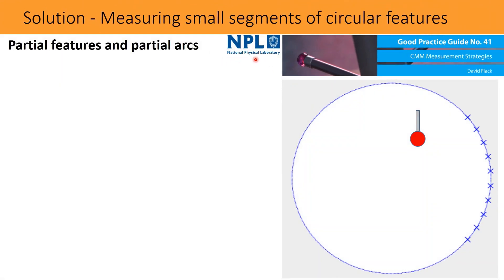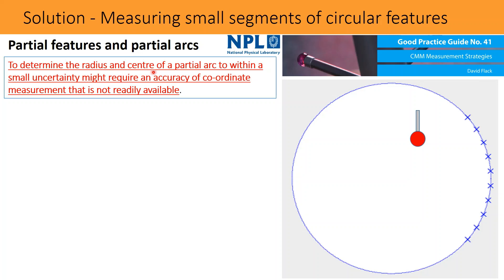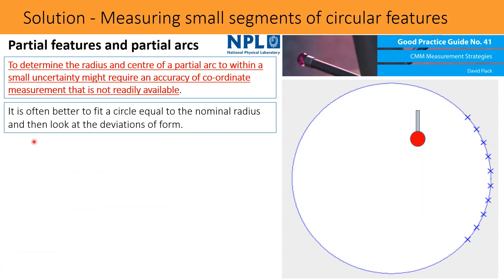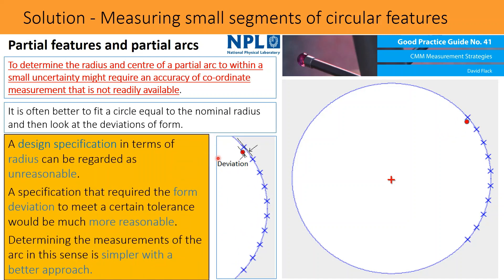For such challenges, the NPL guide suggests: to determine the radius and centre of a partial arc within a small uncertainty might require an accuracy of coordinate measurement that is not readily available. It is often better to fit a circle equal to the nominal radius given in the drawing and then look at the deviations of form. A design specification in terms of radius can be regarded as unreasonable; a specification requiring form deviation to meet a certain tolerance would be much more reasonable.